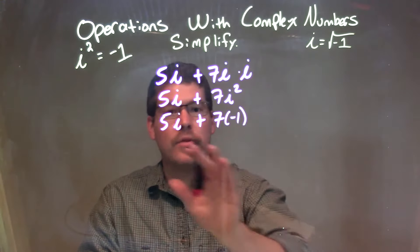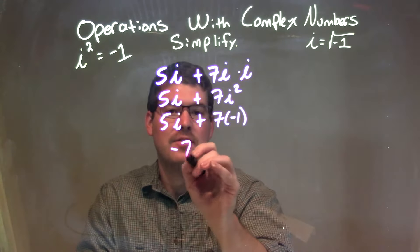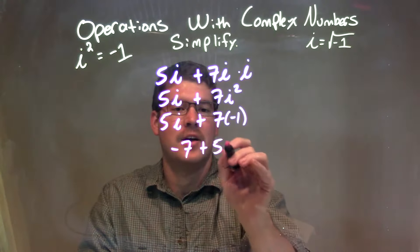So we have negative 7 right there. Normally, with complex numbers, we write that number up front. So we have negative 7 here up front plus 5i, and that is our final answer.